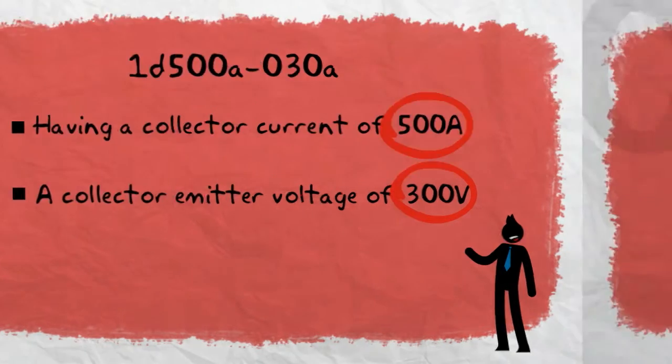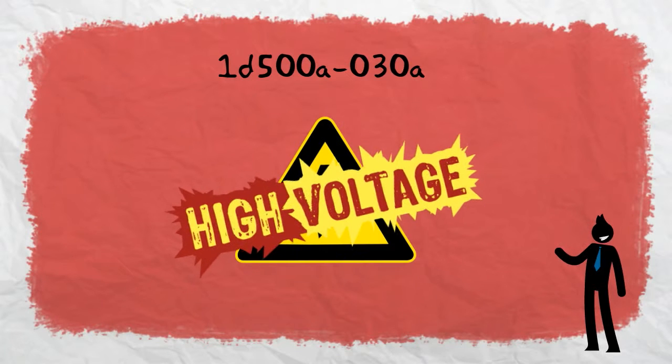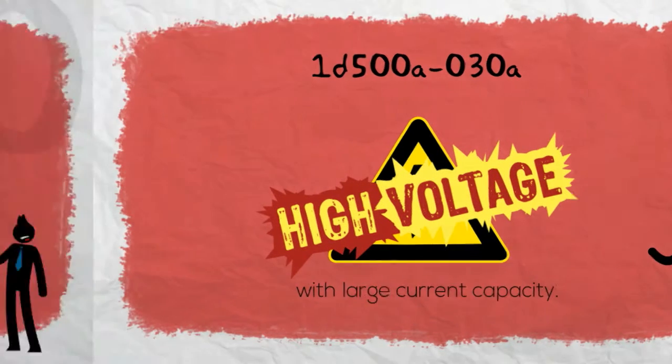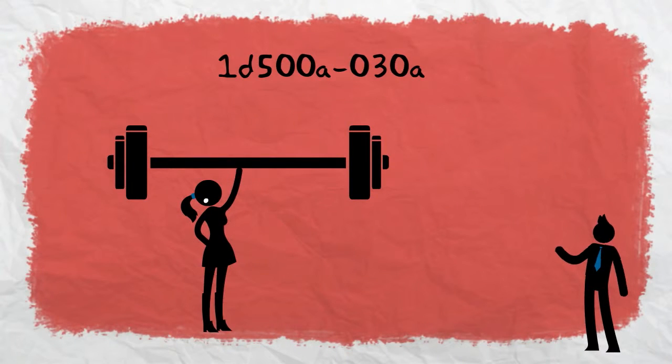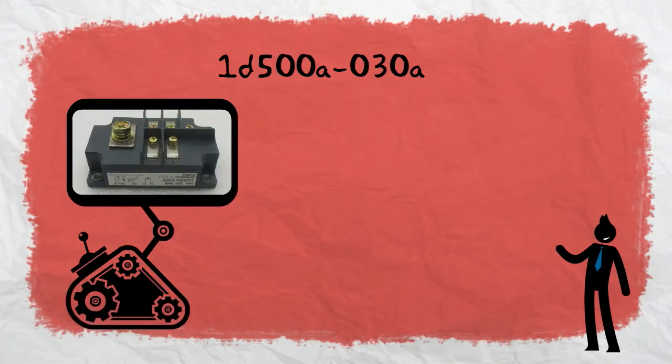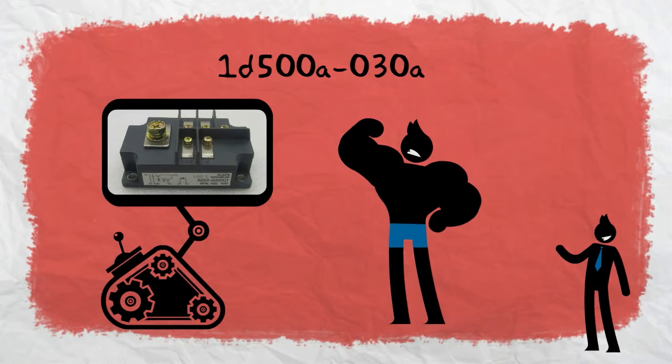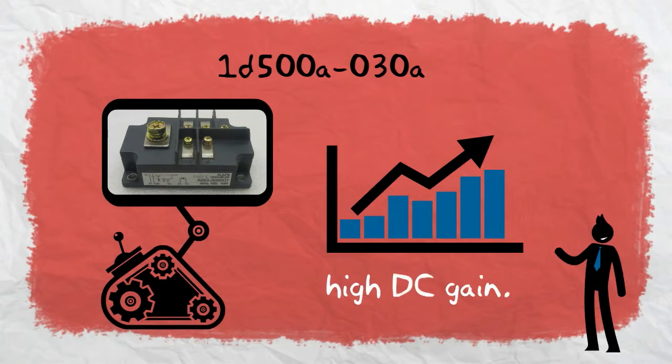this transistor operates on high voltage with large current capacity. Though very light and compact at approximately 2.20 pounds, 1D500A030A has an amazingly sturdy design and housing that has high DC gain.